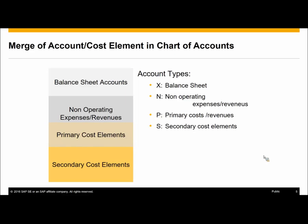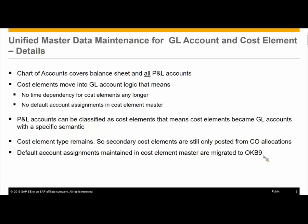The completely new approach is that we now have P&L accounts for secondary cost elements as well — these are the cost elements used during settlement and allocation. During migration to Simple Finance, we have to merge all cost elements into the accounts, and new accounts are created for secondary cost elements. Since we no longer have separate cost element master data, the default account assignment maintained in cost element master data is migrated to OKB9. This is why after migration you might go from 50 entries in OKB9 to 150 entries — it happens when the cost element master data differs from what was maintained in OKB9.